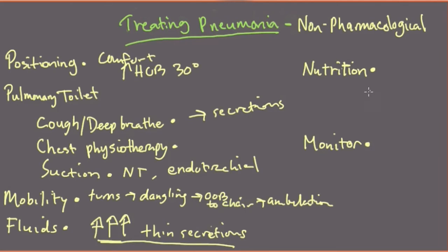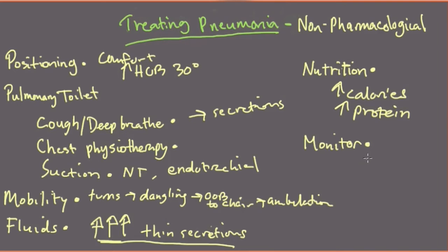Nutrition is also important. These patients are expending a lot of energy breathing — much more than they would normally. To support that expenditure of energy, you want to increase calories and increase protein intake. This is not the time to put your patient on a diet; they need all the energy they can get to maintain the level of exertion required just to breathe.